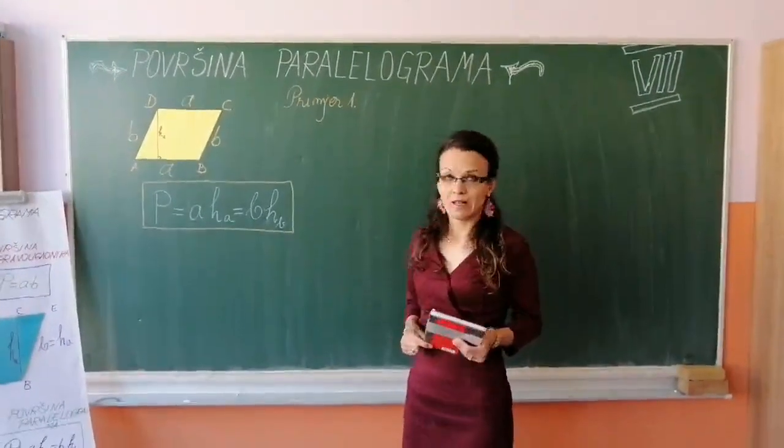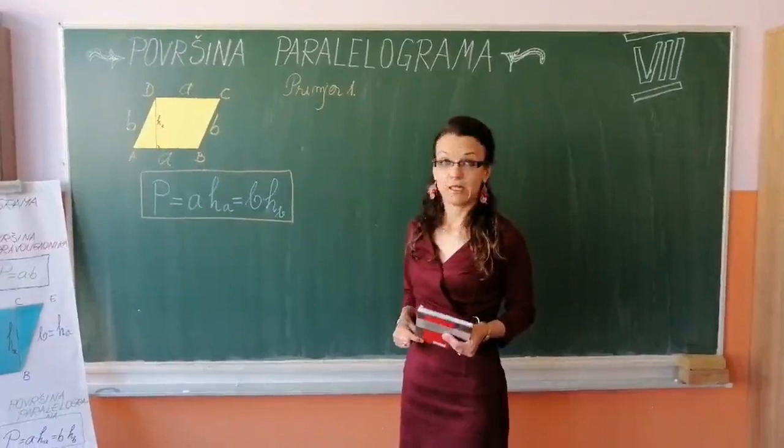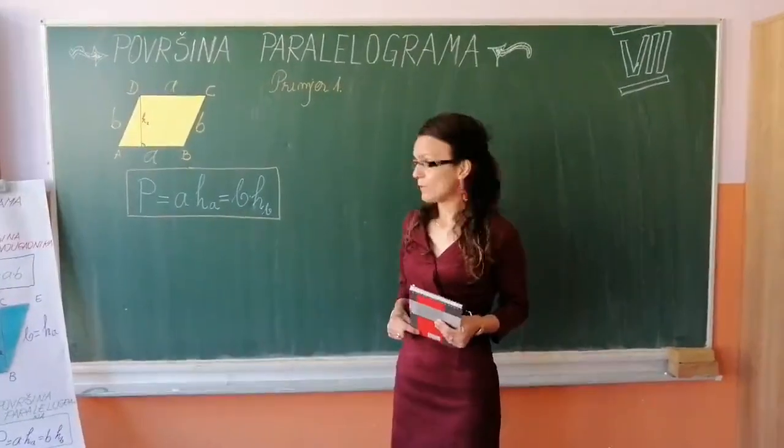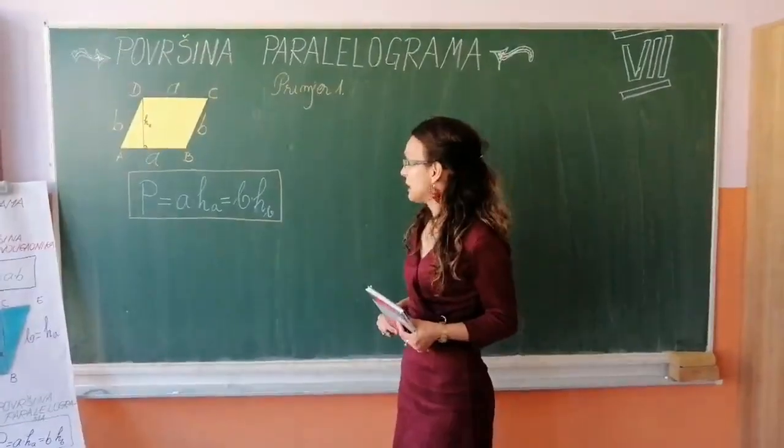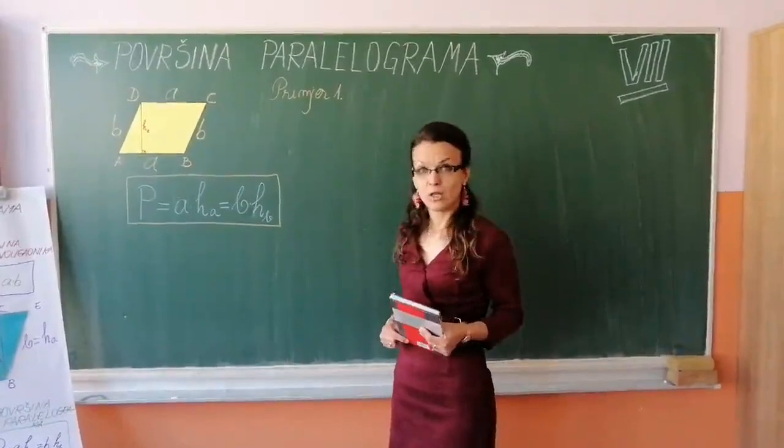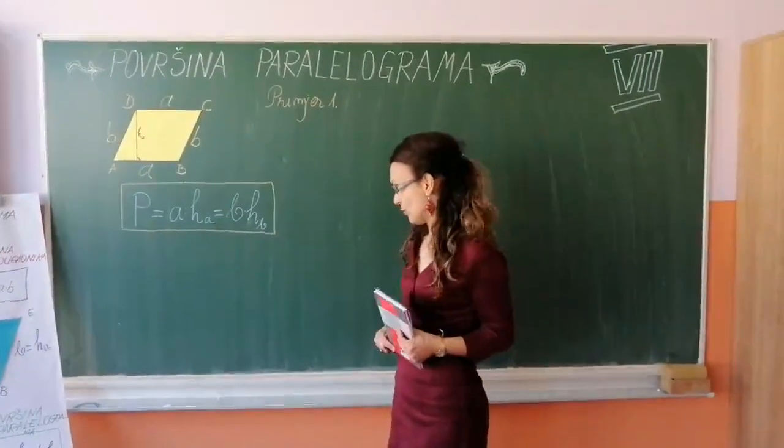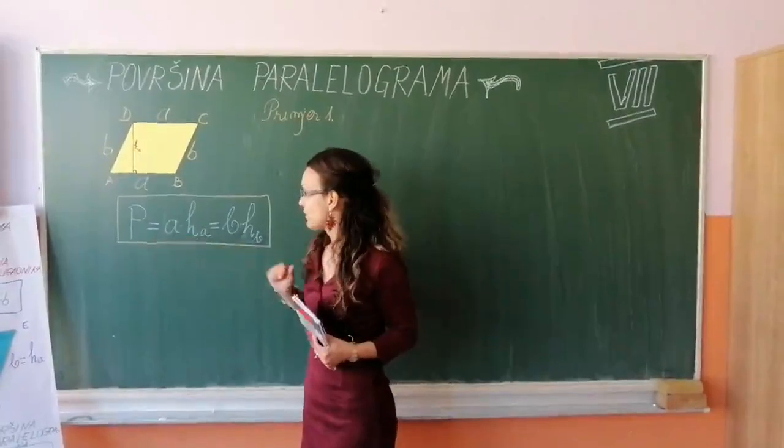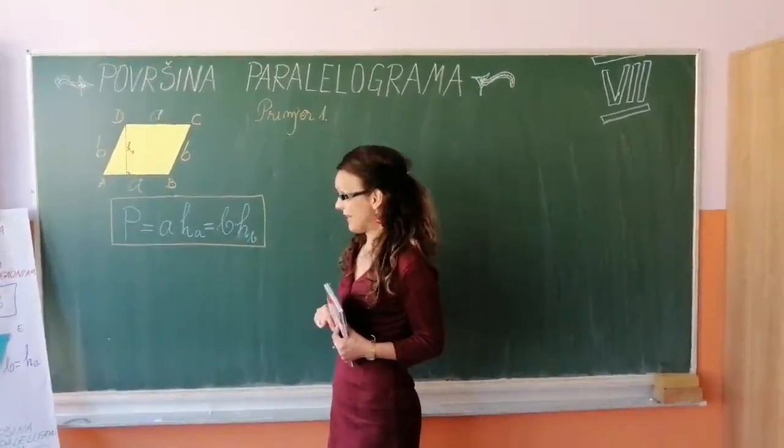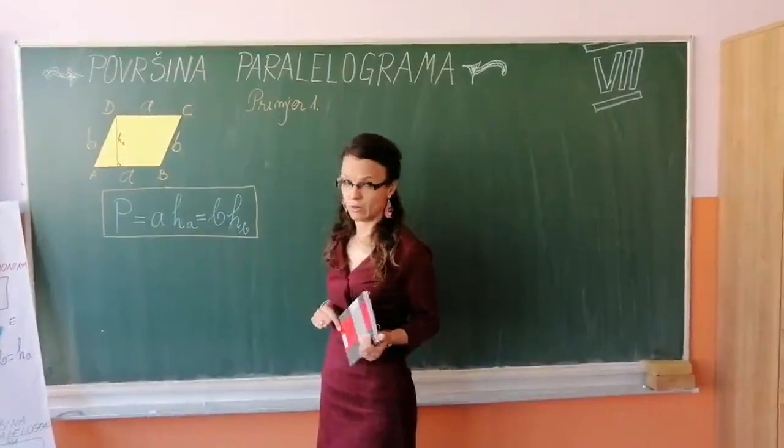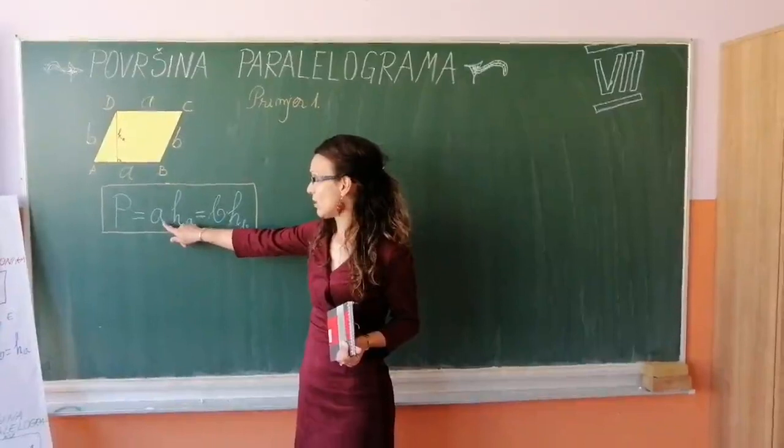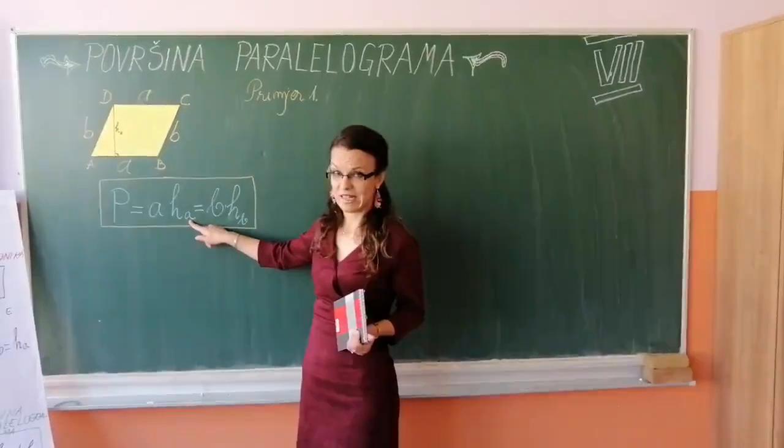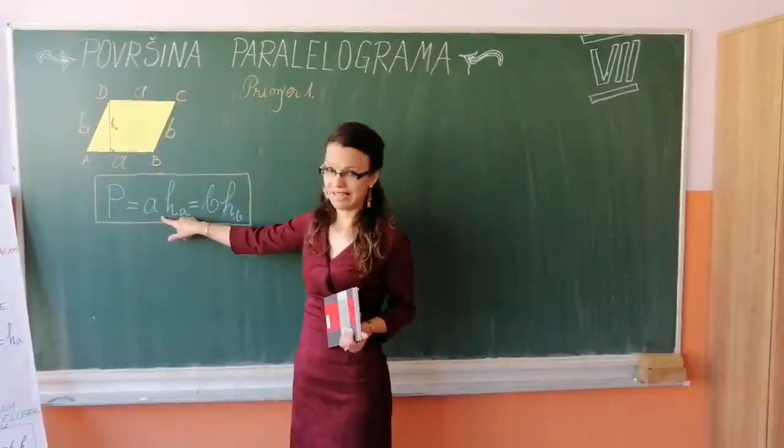Upravo smo ilustrovali način transformacije pravougaonika u paralelogram i uvidjeli očuvanje datih površina. Pokušajmo sada kroz par računskih zadataka vidjeti kako i na koji način površinu paralelograma možemo izračunati. Ja sam ovdje već skicirala kao što vidite jedan proizvoljni paralelogram i odmah ispisala formulu odnosno obrazac na osnovu koga računamo njegovu površinu. Pa kao što sam malo prije naglasila, ako od podataka imamo poznatu stranicu A i visinu koja odgovara toj stranici, koristit ćemo obrazac A puta ha.